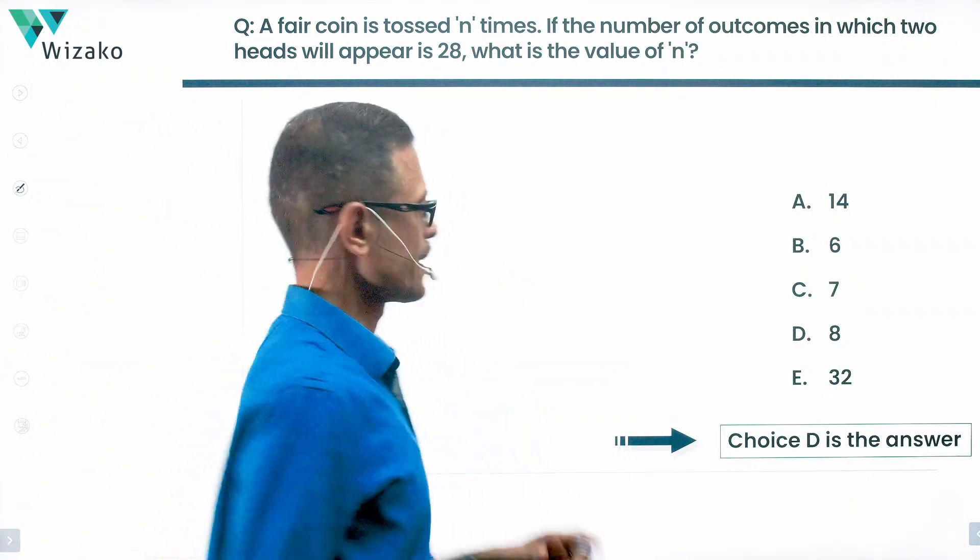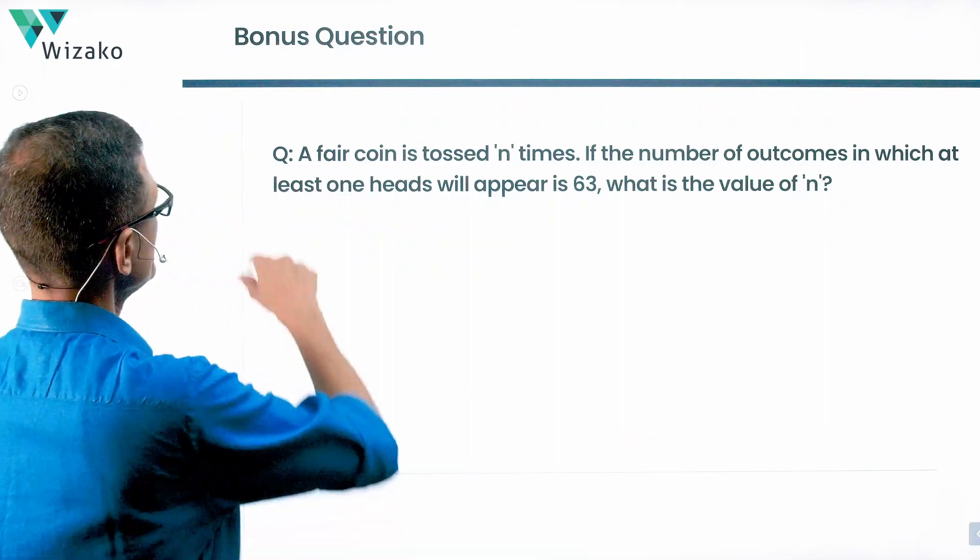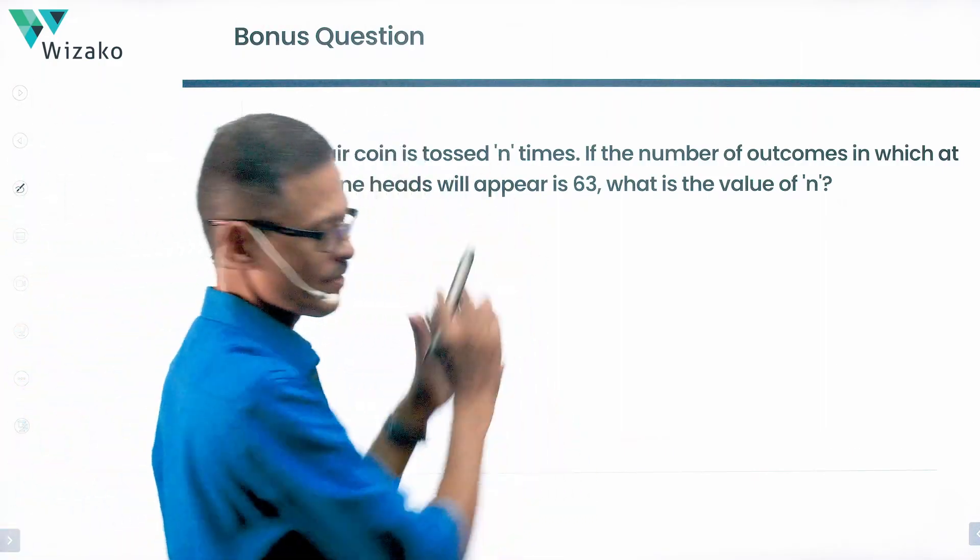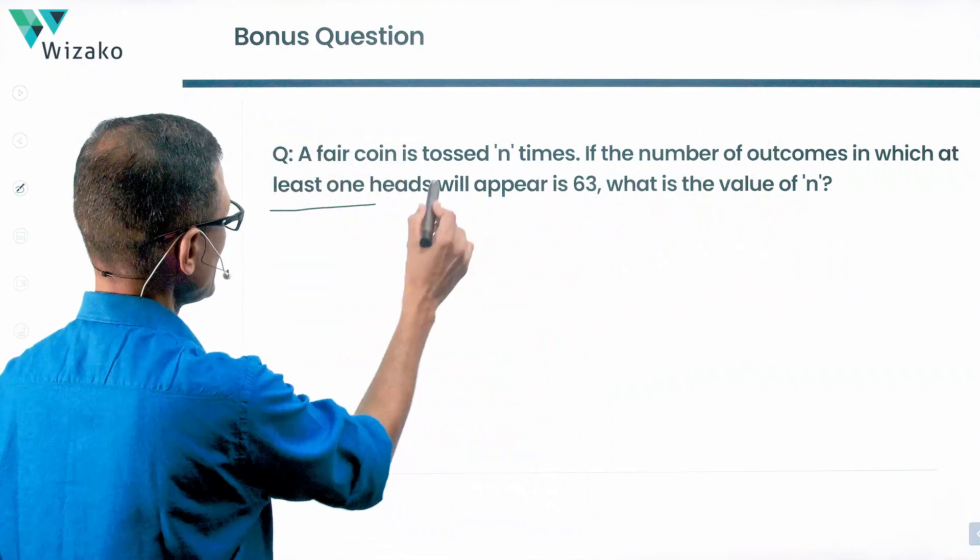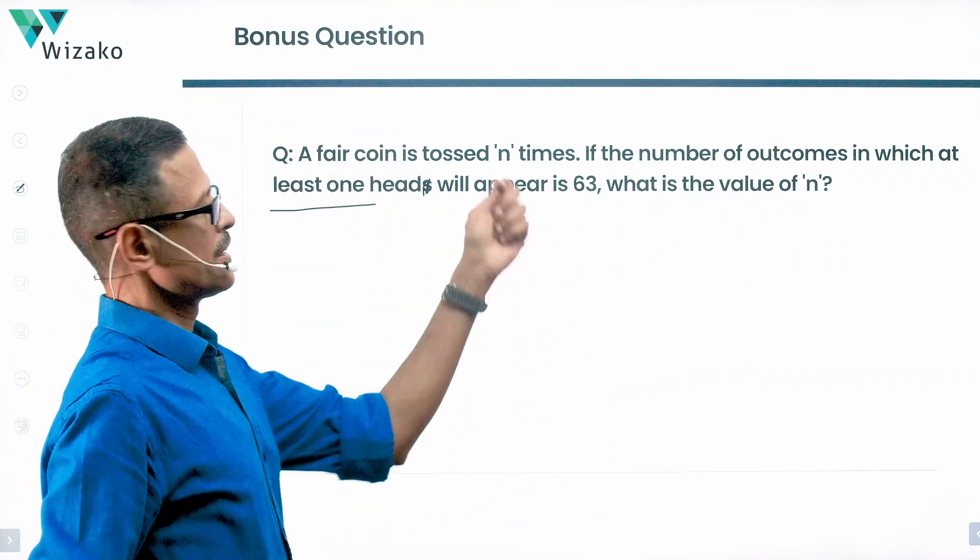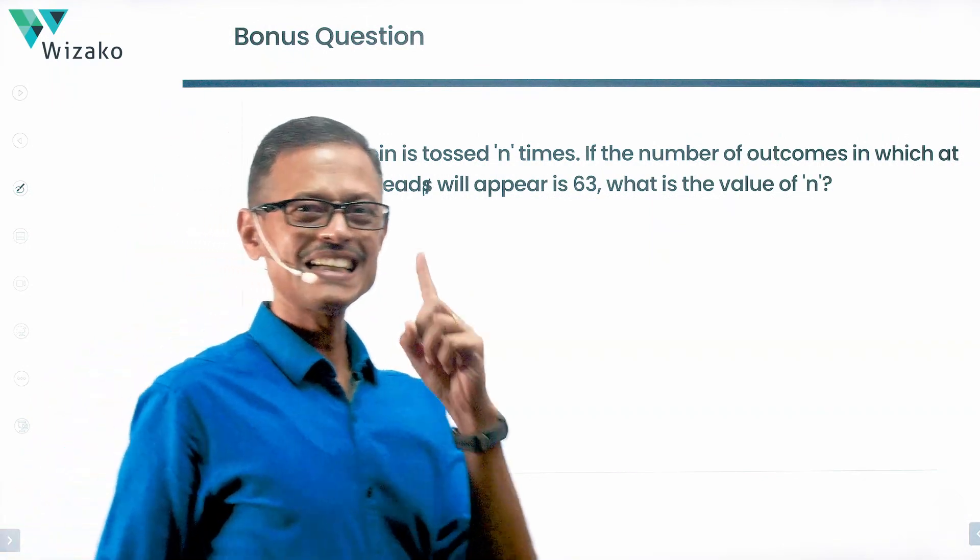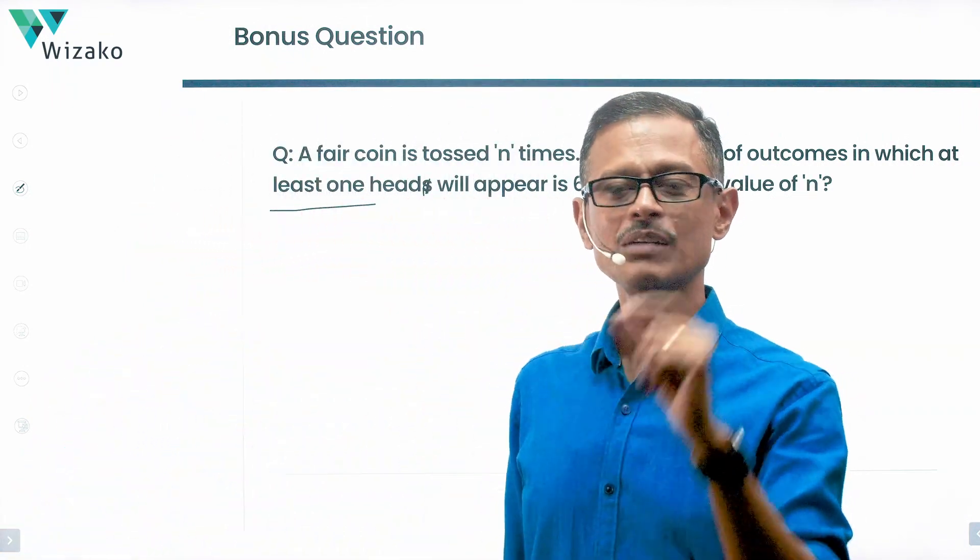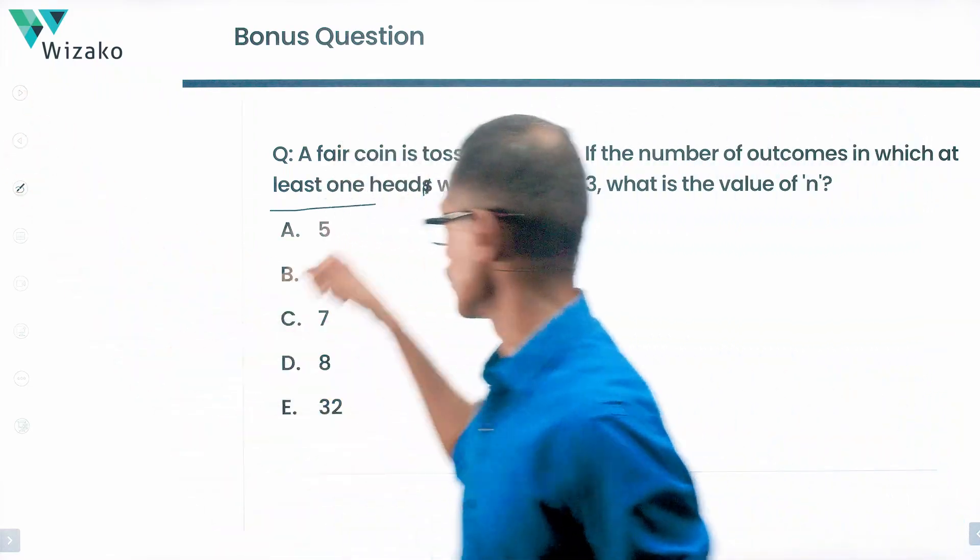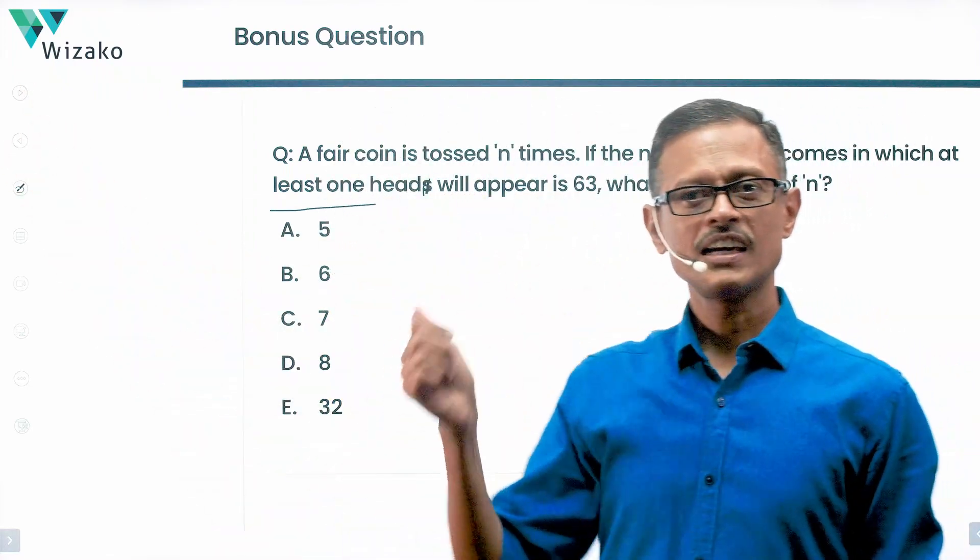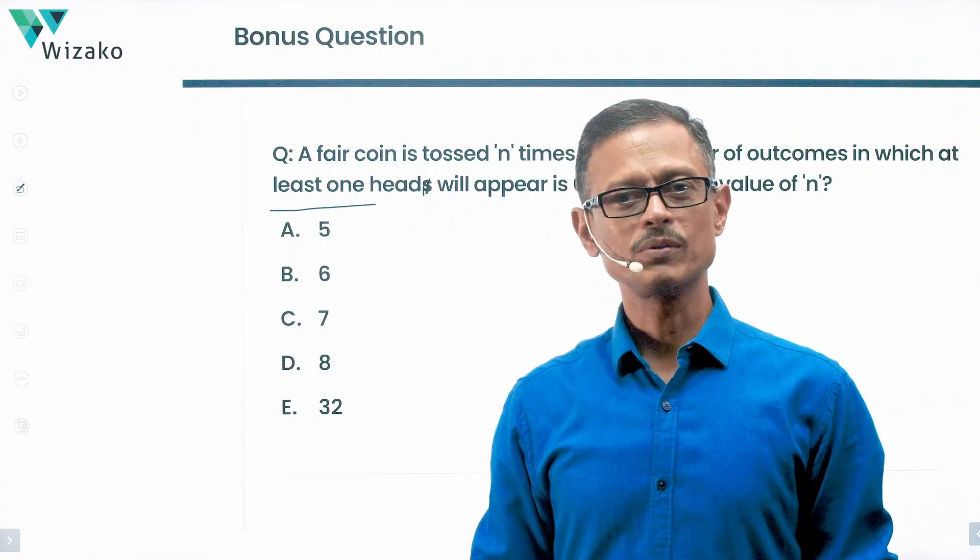Got a bonus question for you. Take a look at that slight modification. A fair coin is tossed n times - yes, we're still finding the value of n. If the number of outcomes in which at least one head appears is 63, what is the value of n? These are the answer options. Solve this question and post your answers to the comment section of this video. Best wishes.